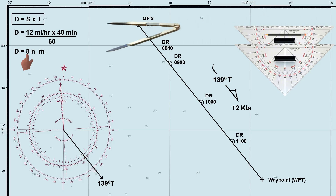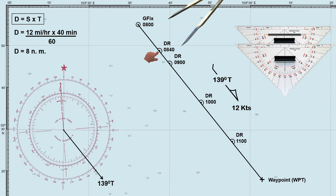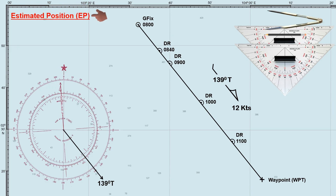Now, take the compass divider and measure 8 nautical miles on the latitude scale. Lay down the compass divider along the planned track, starting from the ship's last known position at 0800 hours. This point is the ship's DR position at 0840 hours. Although the DR position is less accurate than other methods, it serves as the foundation for determining a more precise ship's location, such as the estimated position.